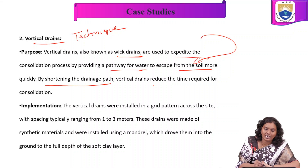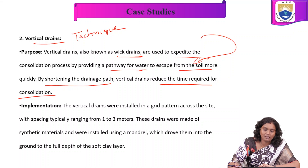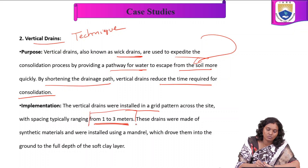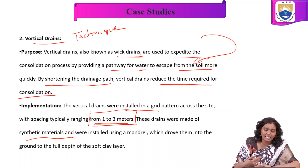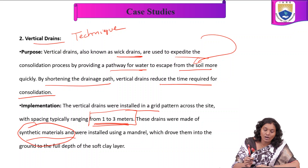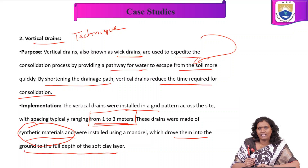The vertical drains were installed in a grid pattern across the site with spacing typically ranging from 1 to 3 meters. These drains were made of synthetic materials and were installed using mandrels driven into the ground to the full depth of the soft clay layer. This is the purpose and implementation of the vertical drain technique.